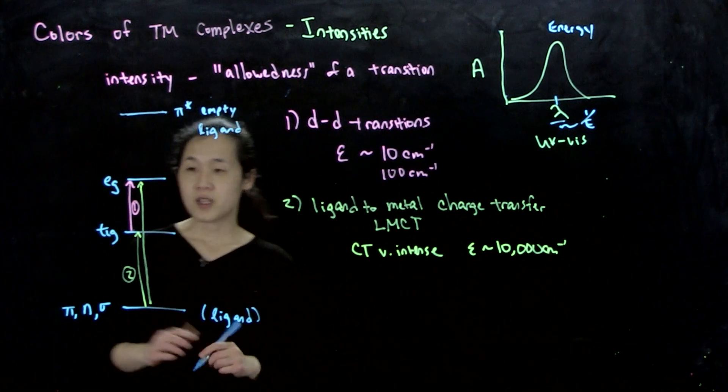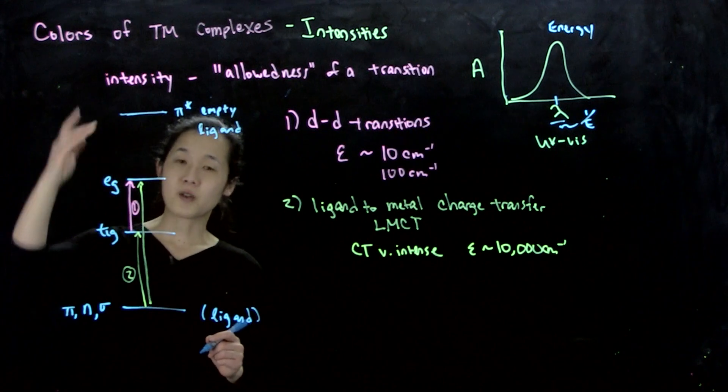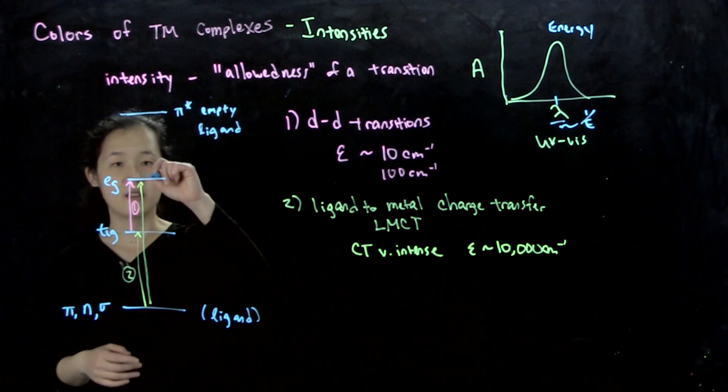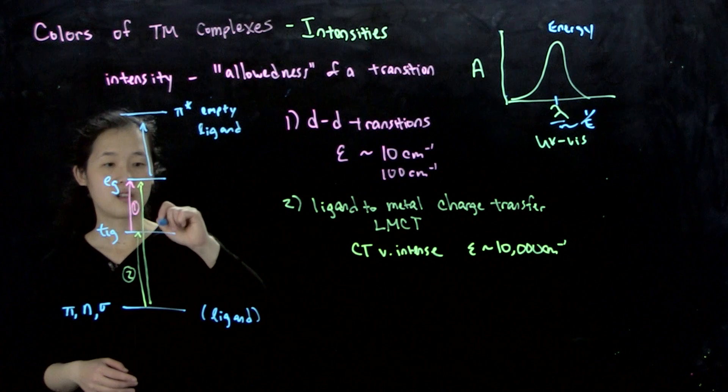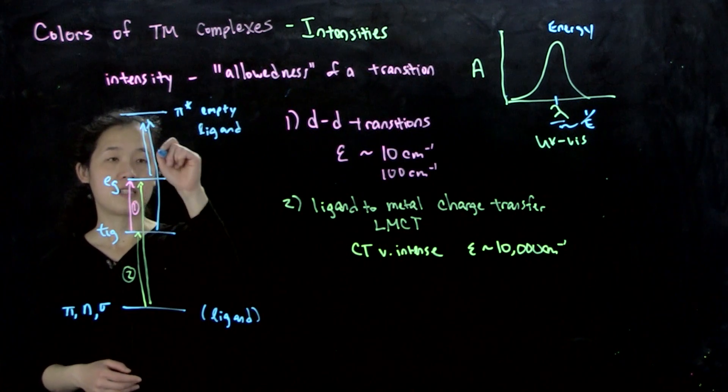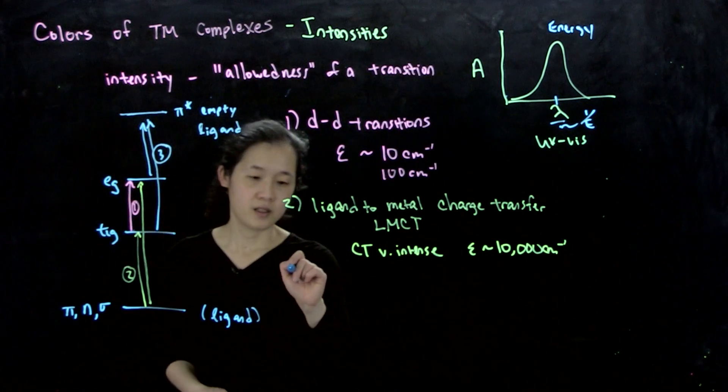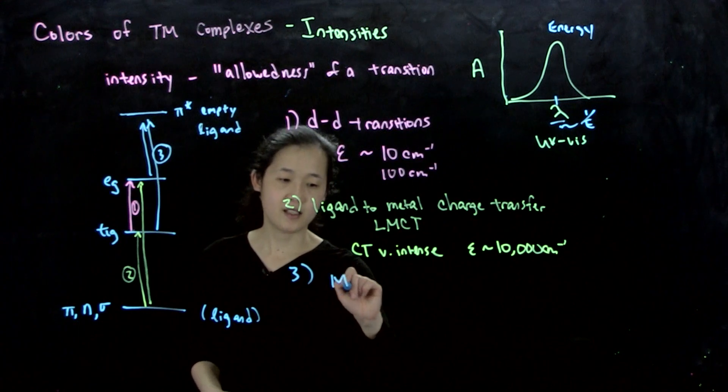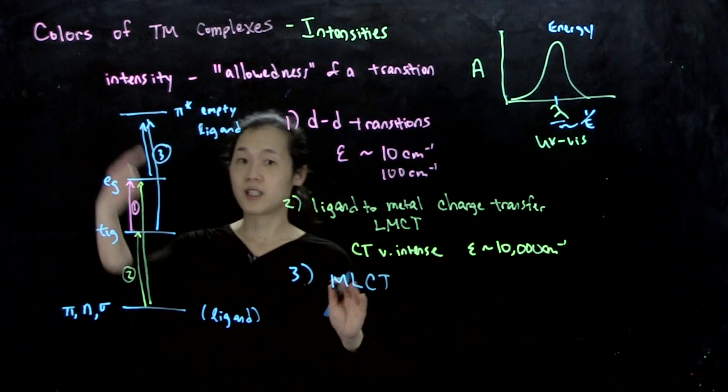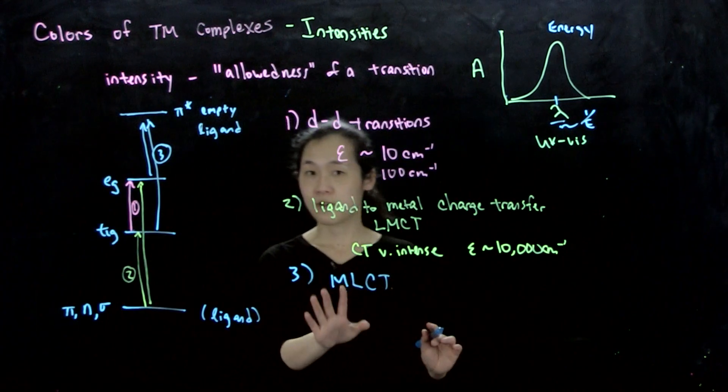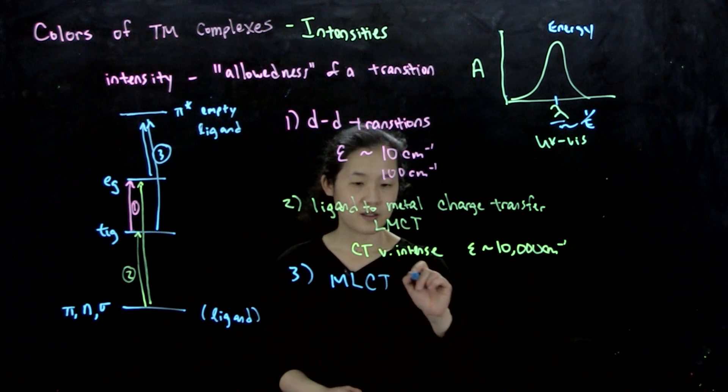The third type would be, let's say we have electrons from d orbitals, and we're going to empty ligand orbitals. This is type 3. So this would be MLCT, metal-to-ligand charge transfer. And these could also be very intense, so these are similar intensity.